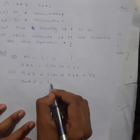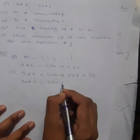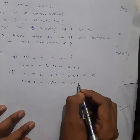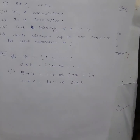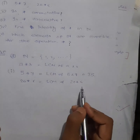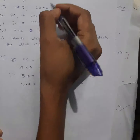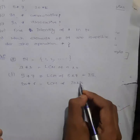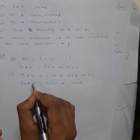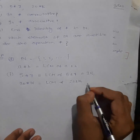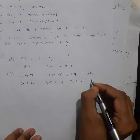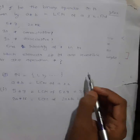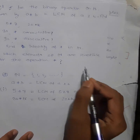Next, LCM of 20 and 16 — sorry, the question is 16, not 6. So LCM of 20 and 16 is 80. I hope you know how to find out LCM.